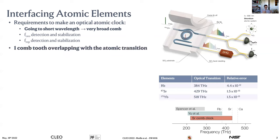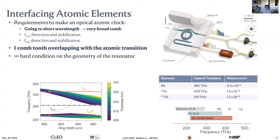You need the comb to overlap, and that's why you need to push so hard to reach the right spectral range. But you not only need to reach it — you actually need to pinpoint your frequency to the exact optical transition. It's not just covering a spectral window; you need to match your optical transition precisely.